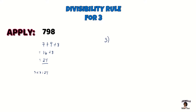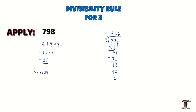Now let's divide three into 798 to verify. Three goes into seven twice; two times three is six; seven minus six leaves one. Bring down the nine, making nineteen; three goes into nineteen six times; six times three is eighteen; nineteen minus eighteen is one. Bring down the eight, making eighteen. Three divides into 798 two hundred and sixty-six times with no remainder. Our digit sum was twenty-four, a multiple of three, and our division confirms this number is divisible by three — so the divisibility rule for three is indeed correct.